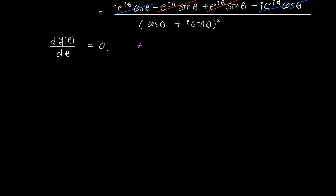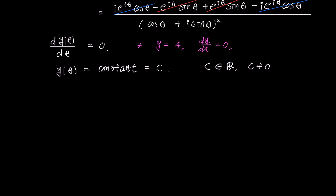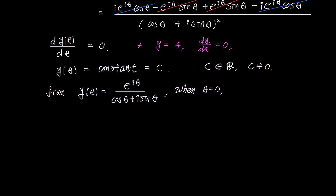What does this mean? To illustrate, if y equals 4, then dy over dx equals 0. This indicates that the derivative of a constant is always 0, implying that y of theta is a constant. Therefore, let's denote y of theta as an arbitrary constant c, where c is a real number and cannot be 0. We defined y of theta as e to the power of i theta over cosine theta plus i sine theta, and to find the constant value, we substitute theta with 0. Then cosine 0 equals 1 and sine 0 equals 0, so y of 0 equals 1 over 1 plus 0, which equals 1.